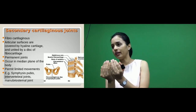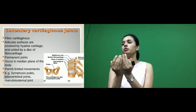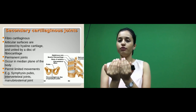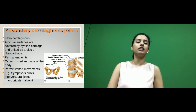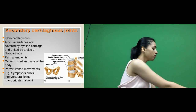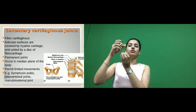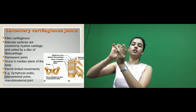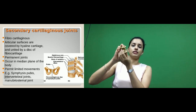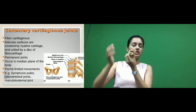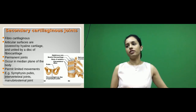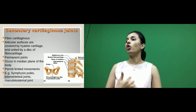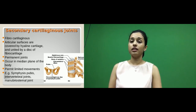Examples of secondary cartilaginous joints include the pubic symphysis, where the pubis bones join at the midline. Also between the vertebrae, where you see an intervertebral disc made up of secondary cartilaginous tissue between the bodies of the vertebrae. Another example is the manubriosternal joint, between the manubrium and the body of the sternum, where you also see the secondary cartilaginous type.